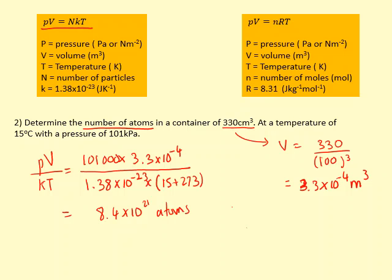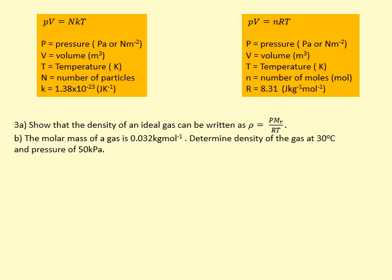Show that the density of the ideal gas can be written as rho equals P times molar mass over gas constant times temperature. We know density is mass over volume, and you can see this equation's got the R in it, so we'll probably use this one. Write that out: PV equals nRT.